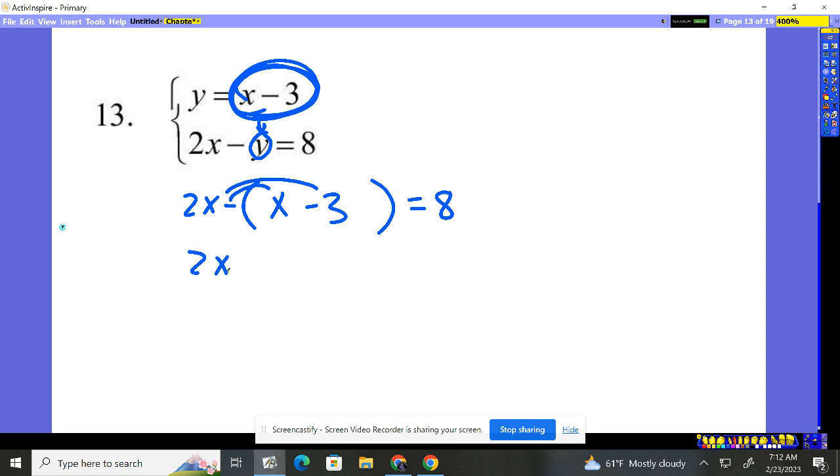So subtract the x, the minus 3 becomes plus 3, equals 8. Now just solve. Well, 2x minus x, that's nice, just a single x plus 3 equals 8. Subtract 3, subtract 3, x is 5.